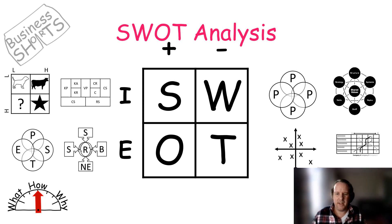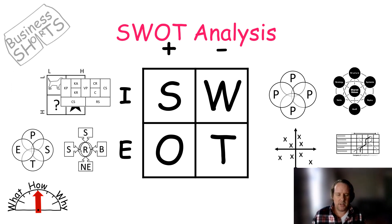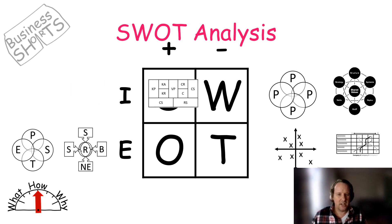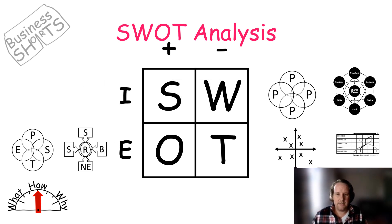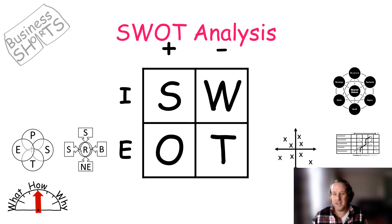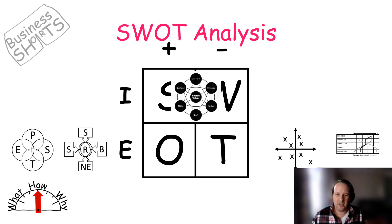The Ansoff matrix, top far left, is an internal model, so that's where some positives or negatives come from. Your Business Model Canvas, second to the left, is also internal, creating strengths or weaknesses. The marketing four P's is an internal model creating strengths and weaknesses, as is McKinsey's Seven S's — an internal analysis producing your positives and negatives.